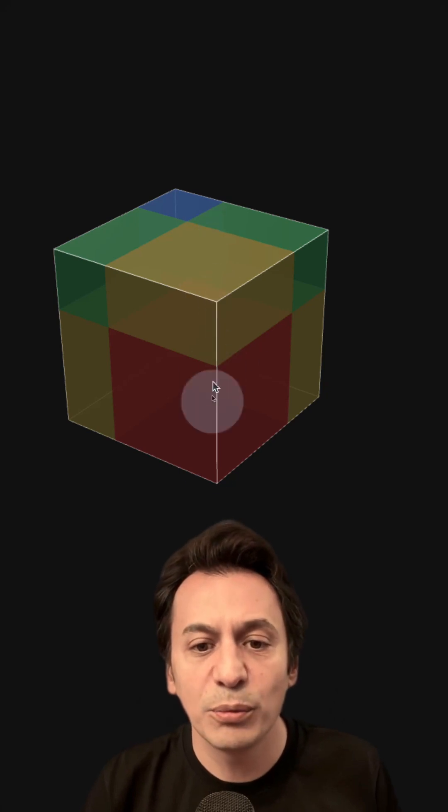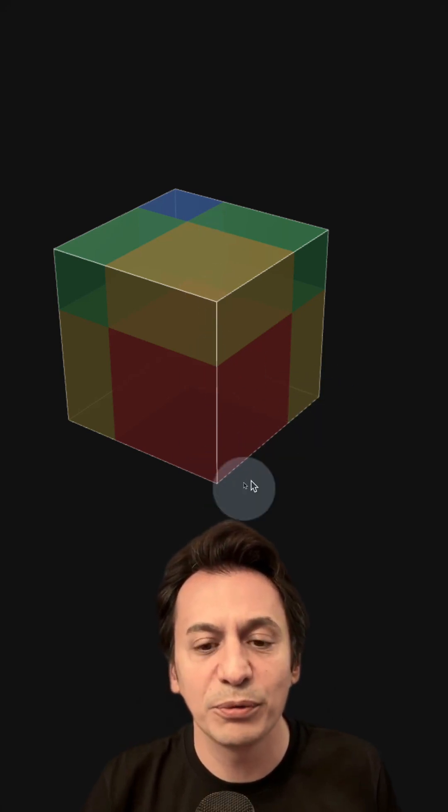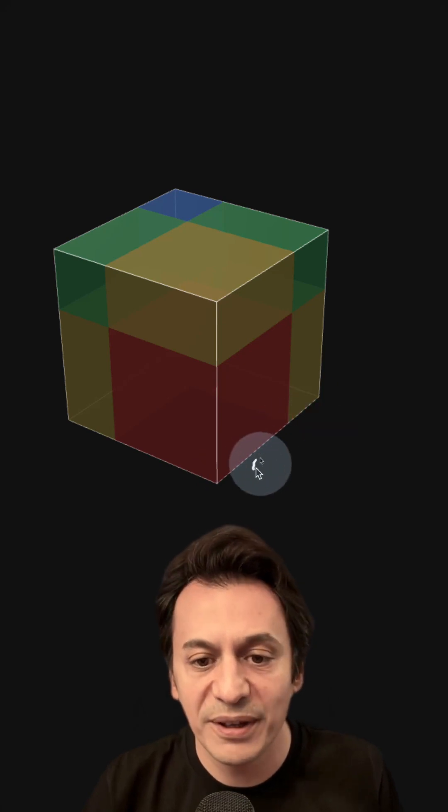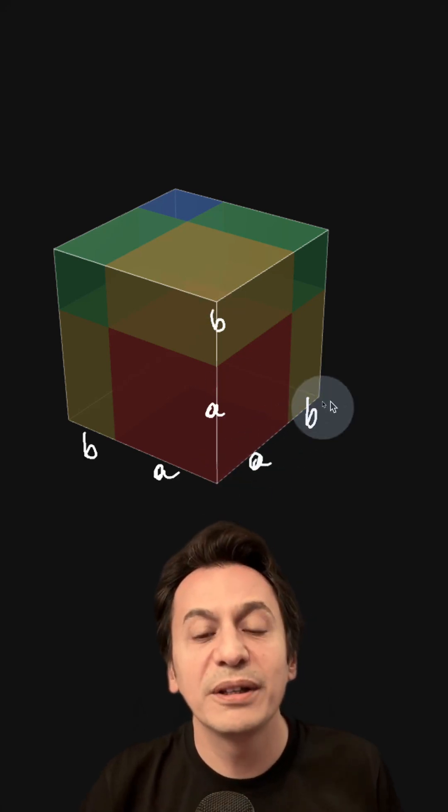You can see here that one edge of this cube is made up of two different lengths. Let's call the longer one A and the shorter one B. So one edge of the cube is A plus B.